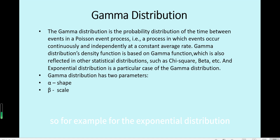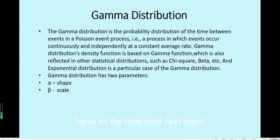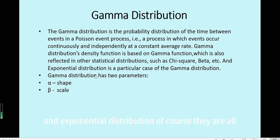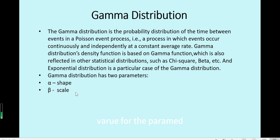For the exponential distribution, which is a particular case of the gamma distribution, it focuses on the time until the next event — the next one event. Many other distributions, like chi-square, beta, and exponential distribution, are all special cases of the gamma distribution with different values for the parameters.